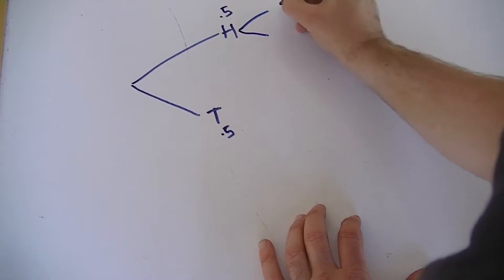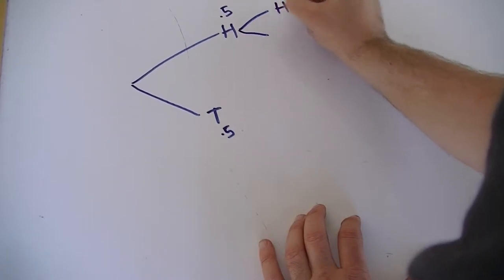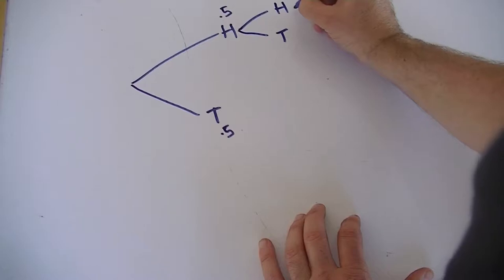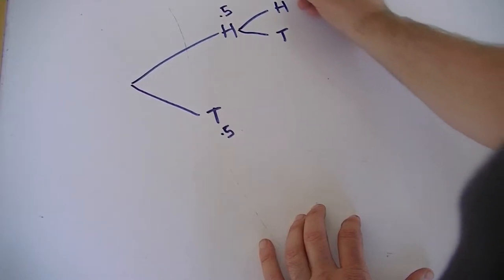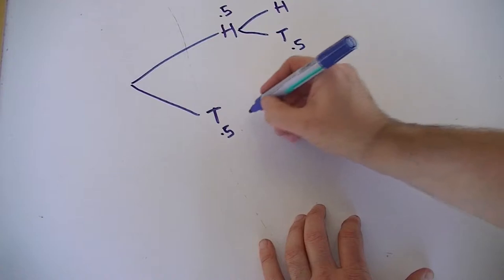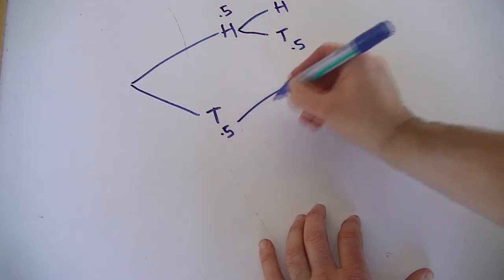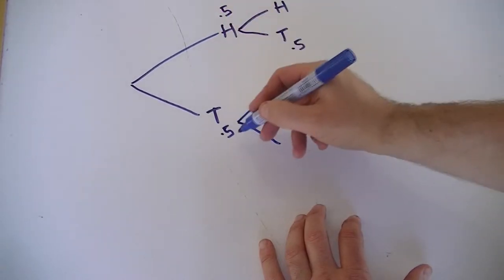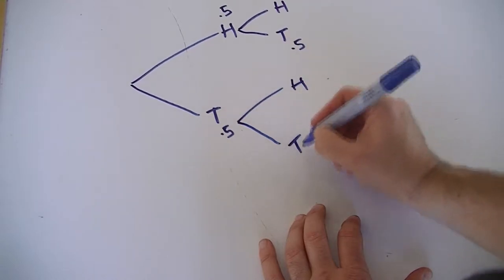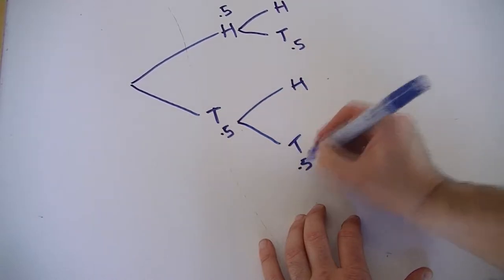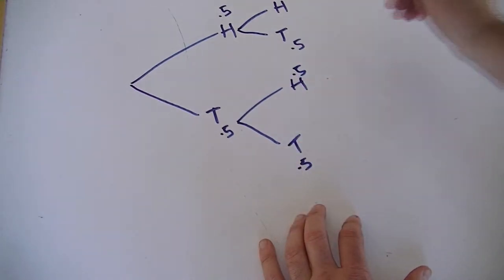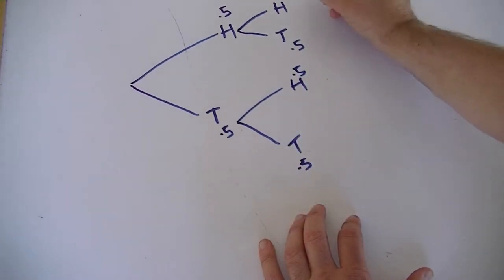The next time we throw a coin it could come up heads again or tails, and again each one of these has a 0.5 probability. After it comes up tails, it could come up heads or tails with the same probabilities. Now let's imagine we throw it a third time, or there's a third coin in play.